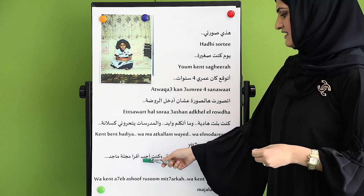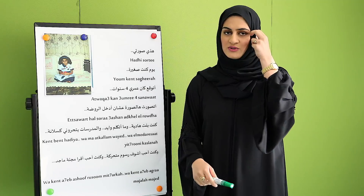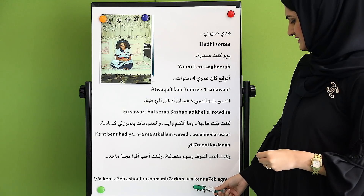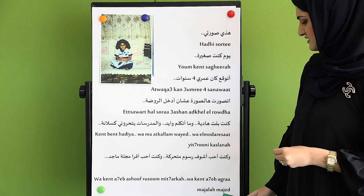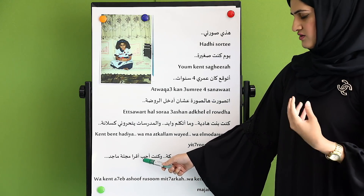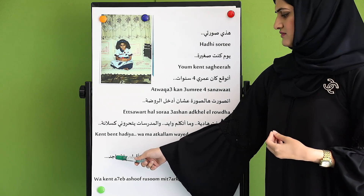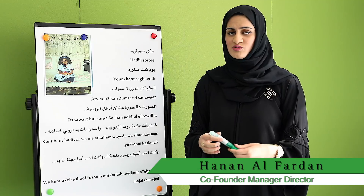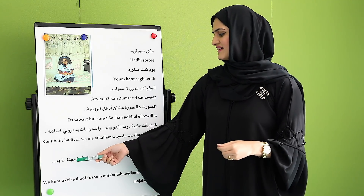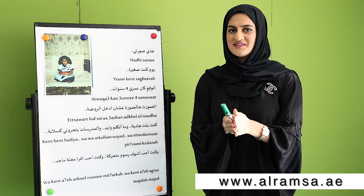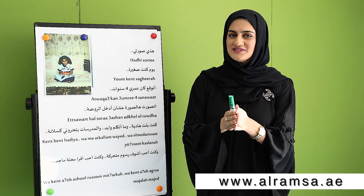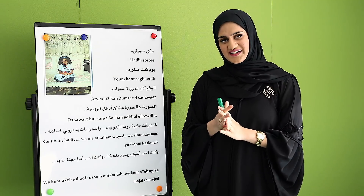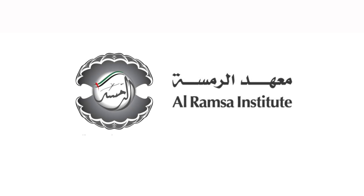كنت أحب أقرأ مجلة ماجد — I used to like to read Majid magazine. It's a very common and well-known magazine for kids in Arabic. I hope you enjoyed this lesson about my childhood, and you saw how I looked when I was almost four years old. شكرا ومع السلامة.